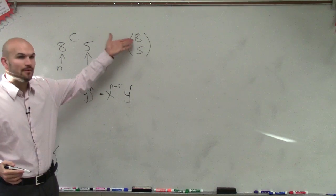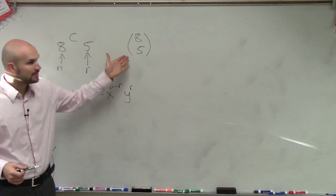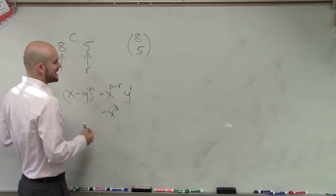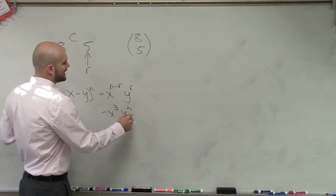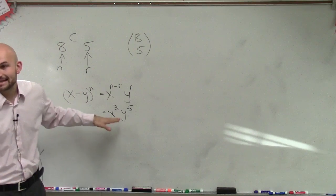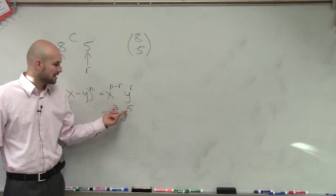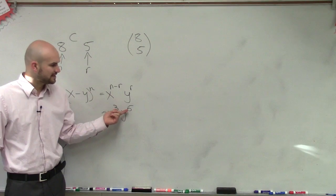Alright, so what I want to do is I want to find our term that is going to have a variable or exponents as x to the third y to the fifth. So that's what I need to find, right? And I need to find my terms that are going to have these powers.